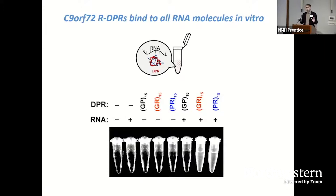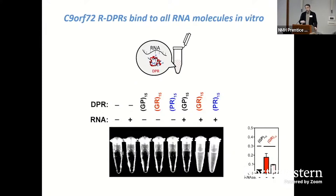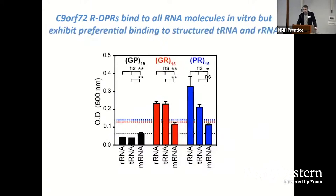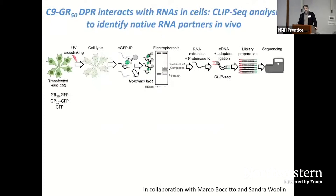We started to investigate what the interaction with RNA would look like, and here I'm showing you some plain test tube experiments. We synthesized highly pure versions of GR and PR, as well as GP as a negative control — GP is not an arginine dipeptide and is not predicted to bind RNA molecules. We put them in a test tube and added total RNA. As you can see, in the presence of total RNA both GR and PR form aggregations with the RNA, which we can partially resolve by treating with RNase. We also found that while both DPRs have the capacity to bind all classes of RNA including mRNA, tRNA, and ribosomal RNA, they exhibit some preferential binding to structured RNA molecules such as tRNAs and rRNAs. However, what you see in a test tube is not always what happens in cells and in patients.